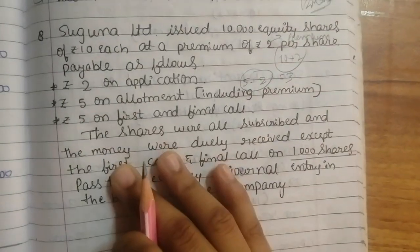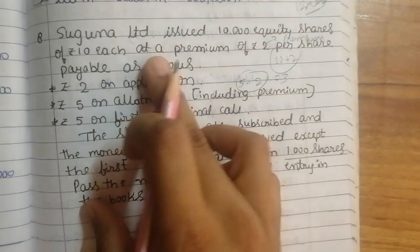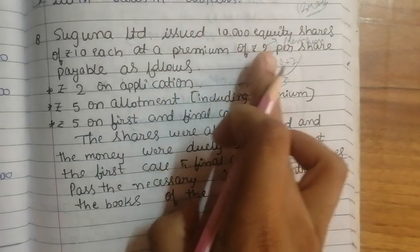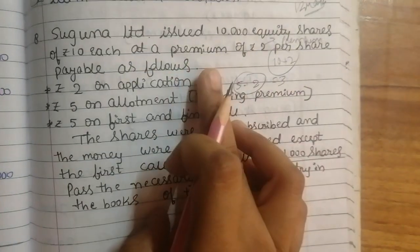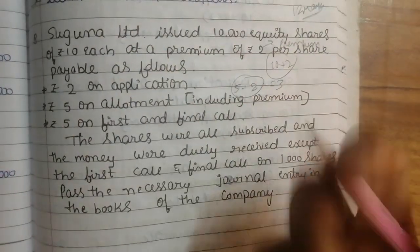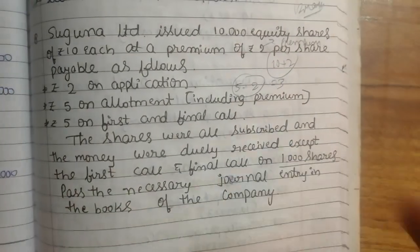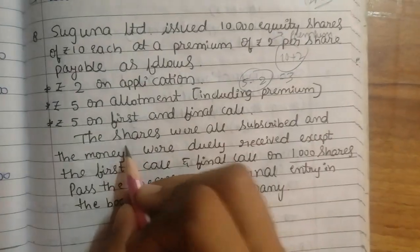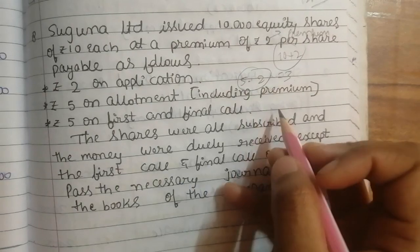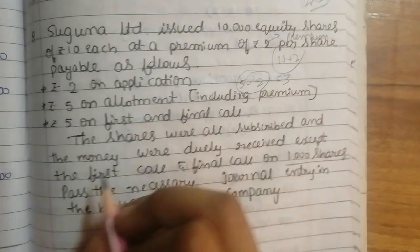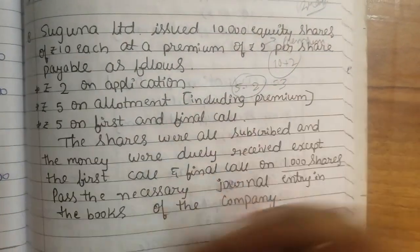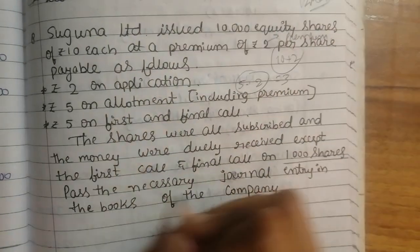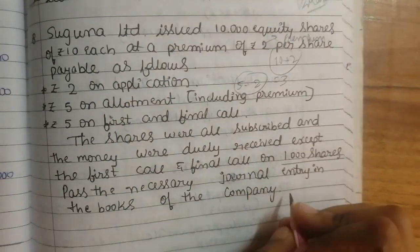Let us see the question. Suguna Limited issued 10,000 equity shares of Rs. 10 at a premium of Rs. 2 per share, payable as: Rs. 2 on application, Rs. 3 on allotment including premium, and Rs. 5 on first and final call. The shares were fully subscribed and money was duly received, except the first and final call on 1,000 shares. Pass the necessary journal entries in the books of the company.